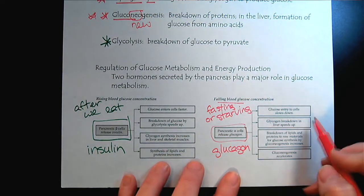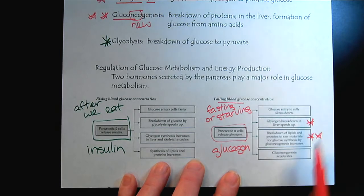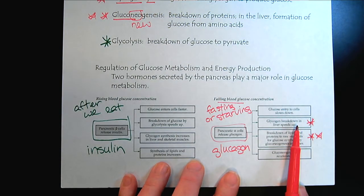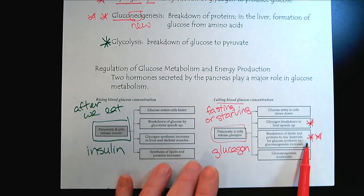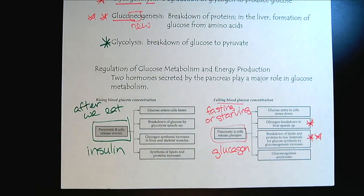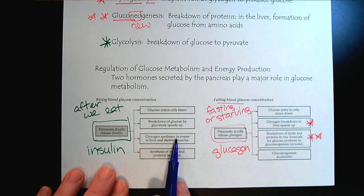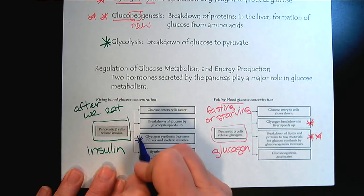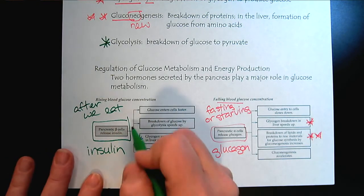Connecting this to what we saw above: with glucagon, this triggers glycogenolysis and gluconeogenesis. Conversely, with insulin, we get glycogen synthesis — that would be glycogenesis — and of course glycolysis.